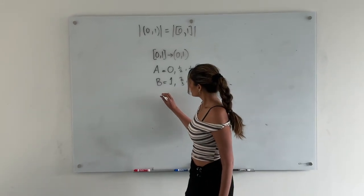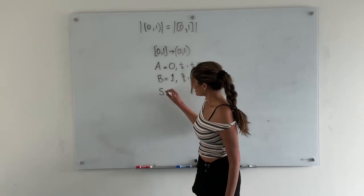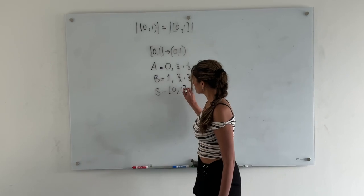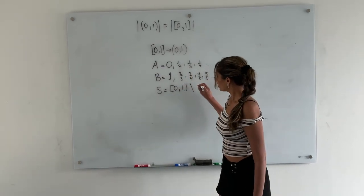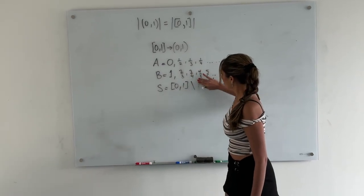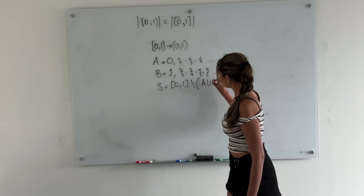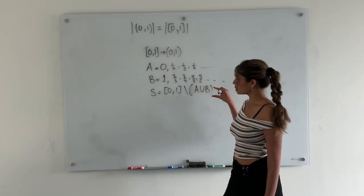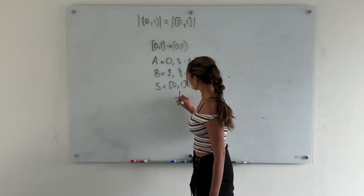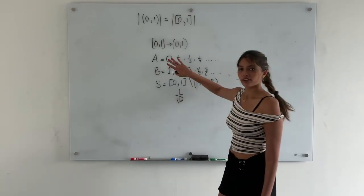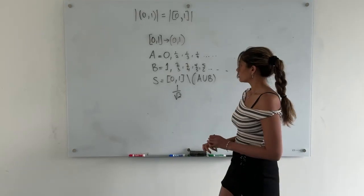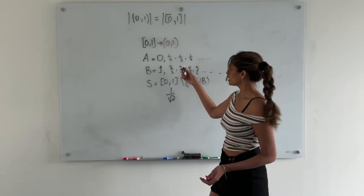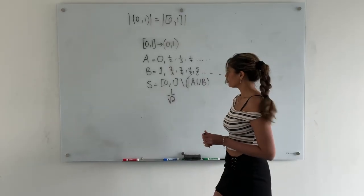Now I'm going to define another set, s, as the set of numbers in the closed interval [0, 1] excluding a union b. So it's all the numbers we haven't hit while defining these sequences. For example, 1 over root 2 — you're never going to find it in either a or b because it's an irrational number, and all numbers in s are irrational since they cannot be expressed in the form p over q.